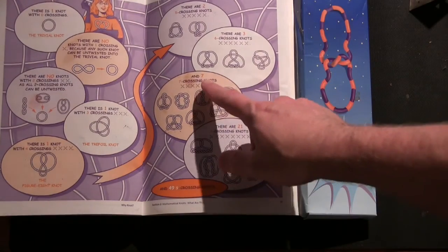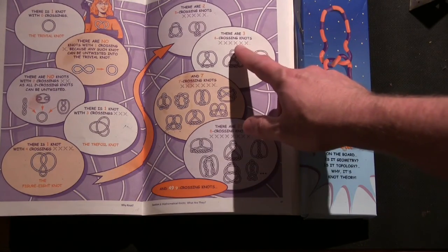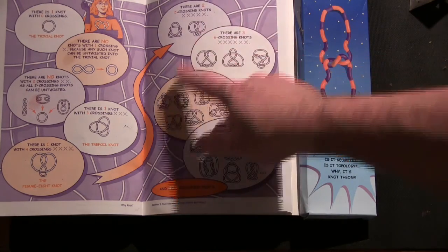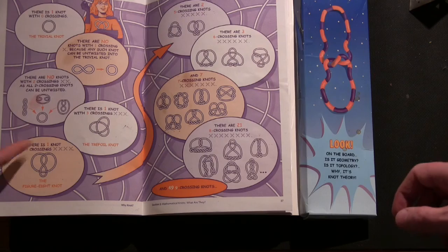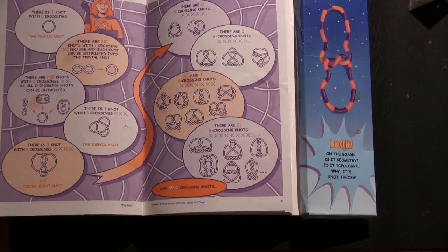And so it turns out there are seven knots with seven crossings, three with six, two with five, only one with four, and then one with three.